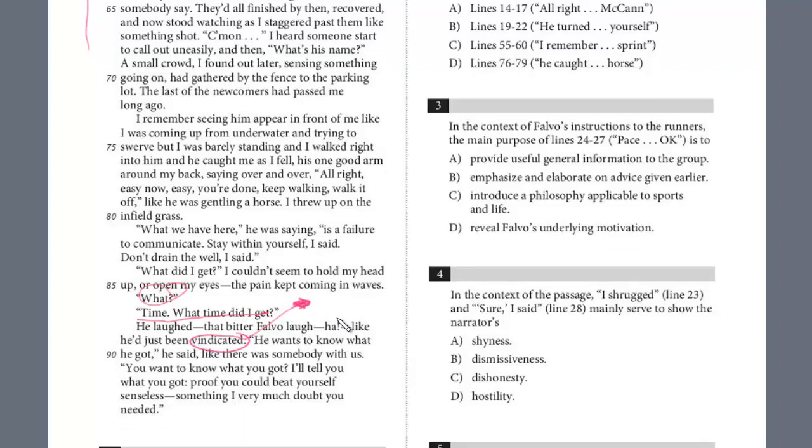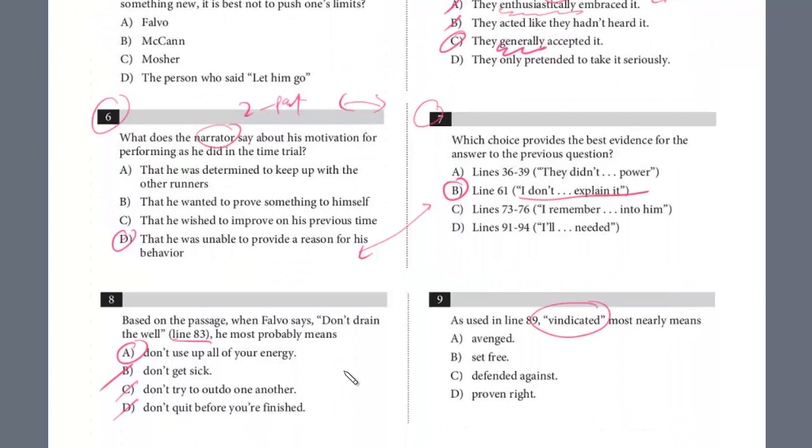So vindicate, let's take a look at the choices. Avenged - so avenged, there has to be evidence that he was seeking revenge. That's not it. Now vindicate, one of the definitions of vindicate, like you hear this in a criminal trial, the defendant was vindicated. It means to set free or exonerate. But that's not what we're talking about here. He's not set free. Defended against, it's proven right. And that's what vindicate means. Besides being set free, one of the primary definitions is to be proven right. He felt vindicated his claim, his warning had proven true. And the answer is D.